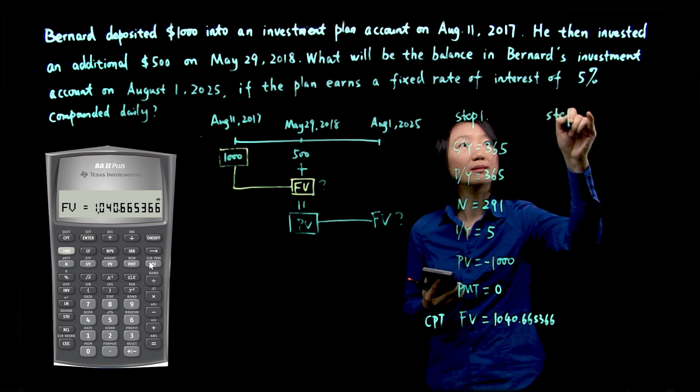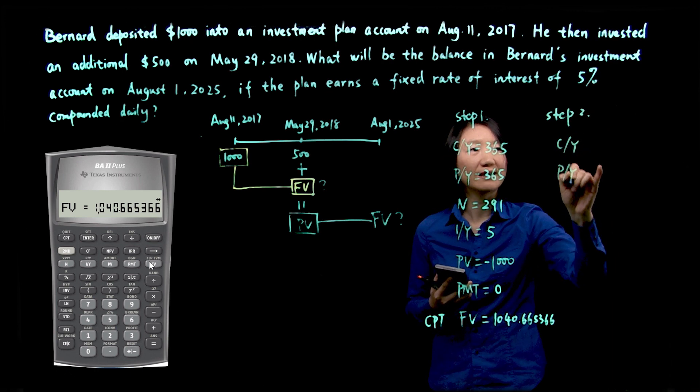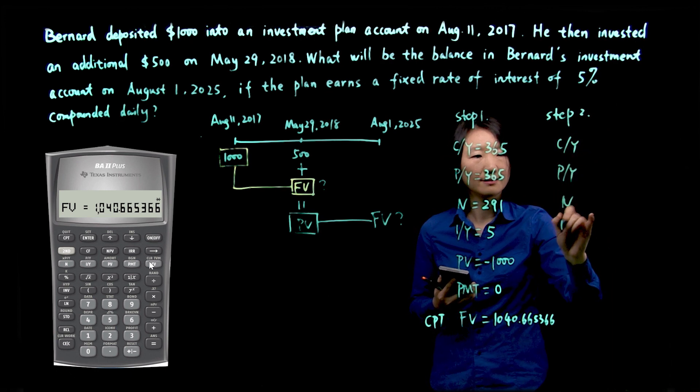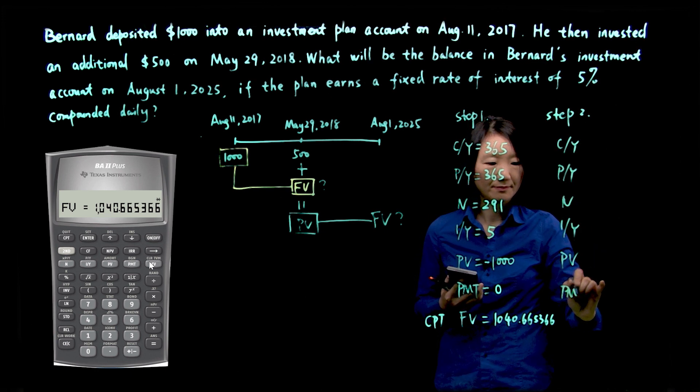Let's do step two. Again, we'll be looking at the second time period and the seven variables.